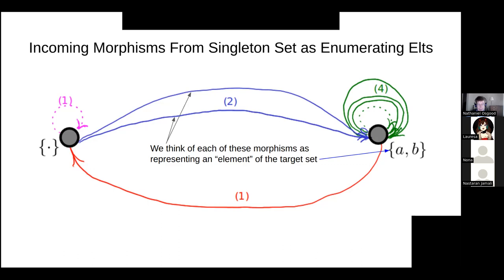Powers turn out to be really important here, and we'll come back to that — it has to do with things called exponential objects, which represent functions. Set is very nice in that the morphisms between sets can themselves be elements of a set. In category theory we say a category has exponential objects if it has the ability to represent its morphisms as objects. Functional programming languages like Haskell, Scala, and Scheme can have sets of functions — that's where exponential objects come from.